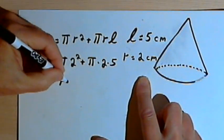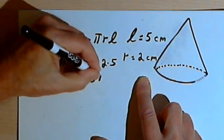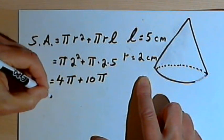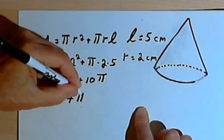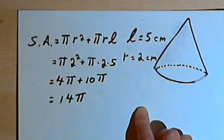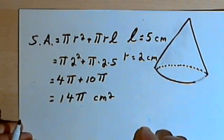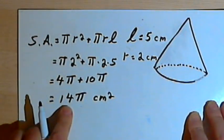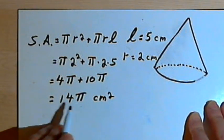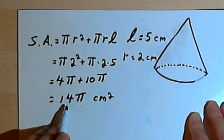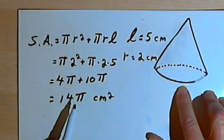2 squared is 4, so that's 4 pi, plus 2 times 5 is 10, so that's 10 pi. I can add those two numbers together and I get 14 pi. I'm dealing in centimeters, so that's going to be square centimeters. And if you want to, you could take instead of pi, use a rough estimate for it, 3.14, multiply that by 14, and get a fairly close approximation of the surface area of the cone. If you want something more accurate, you could put this into your calculator.